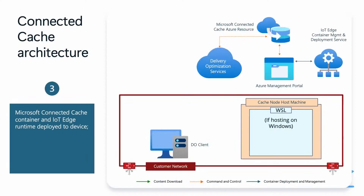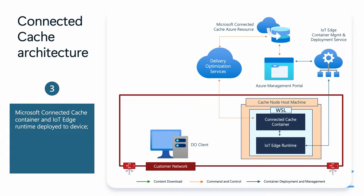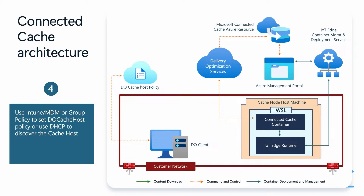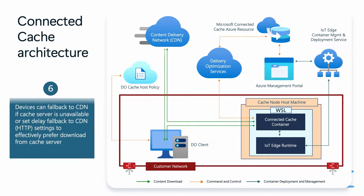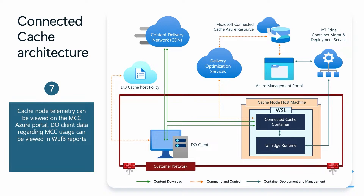After running the deployment script on your host machine, it will install all the necessary components, including the IoT Edge runtime and the Connected Cache container. Then you'll use your device management platform or group policy to set the DO cache host policy that points your enterprise managed Windows device to your cache node when requesting Microsoft content. You can also set a policy that tells the DO client to use DHCP to dynamically discover your cache node. Your enterprise managed devices will fall back to CDN download if the cache node is unavailable. You can monitor your cache node's activity using the Azure Management Portal, and you can see what content sources your DO clients are using by looking at the Windows Update for Business reports.